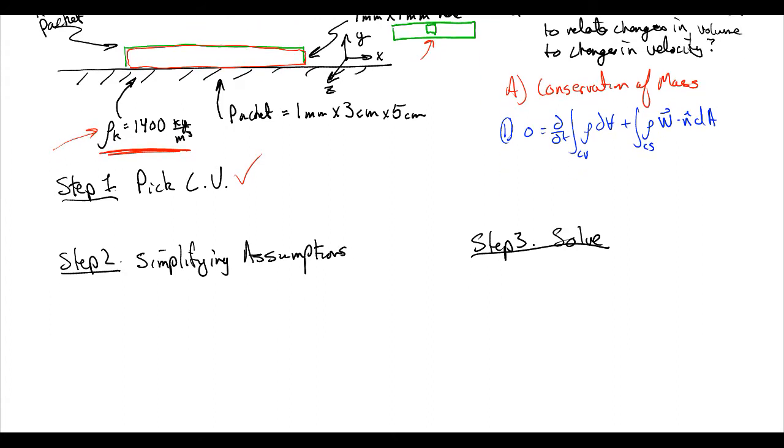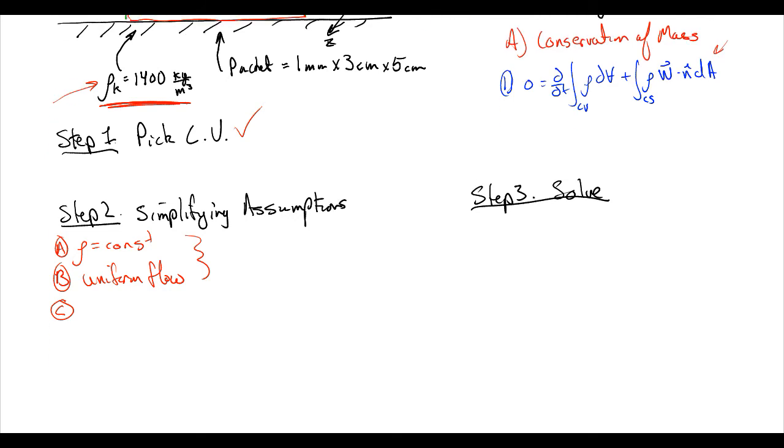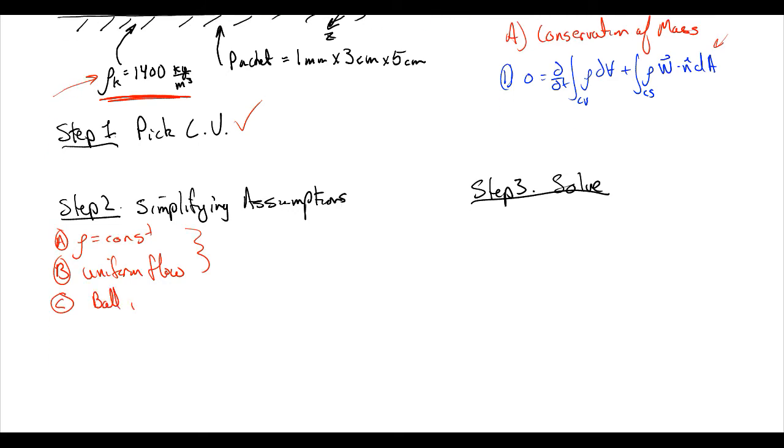What simplifying assumptions are we going to make? One is that density is equal to a constant. Two is uniform flow. And remember the combination of these two allows us to not have to do this integral here, the second integral in the conservation of mass equation. And we're going to also assume, just to make this explicit, and we always want to make our assumptions explicit because it helps our future co-workers and also the graders, that the ball velocity is equal to a constant while squishing the packet.